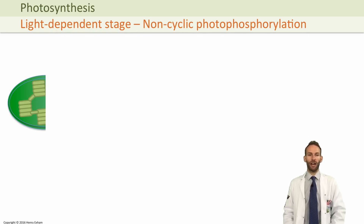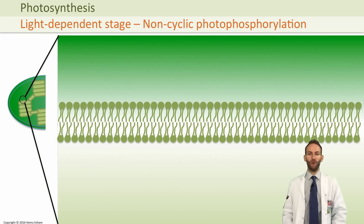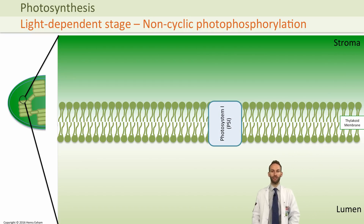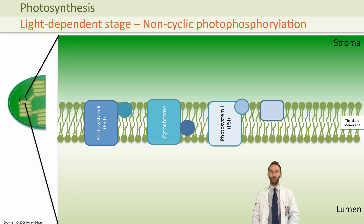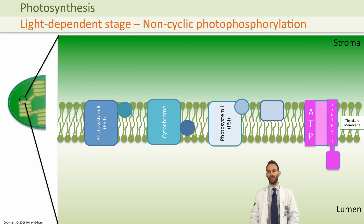The energy from ATP and NADPH is used to produce glucose. Looking at the light-dependent stage in more detail, if we zoom in on the thylakoid membrane we can see structures called photosystem one and photosystem two, where the chlorophyll is found. There are also electron carriers forming an electron transport chain — just like in respiration — and an ATP synthase, also as seen in chemiosmosis during respiration.